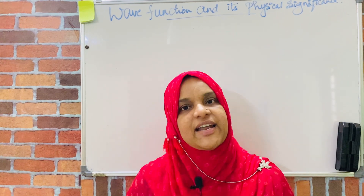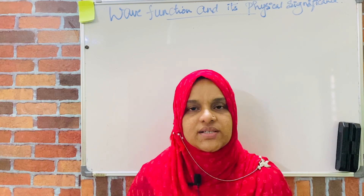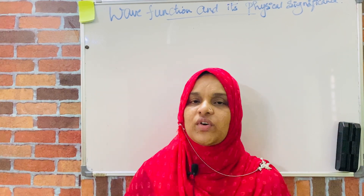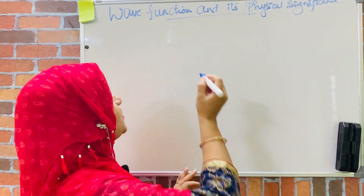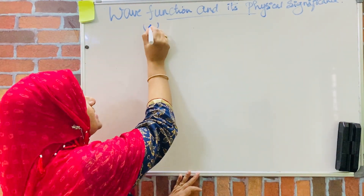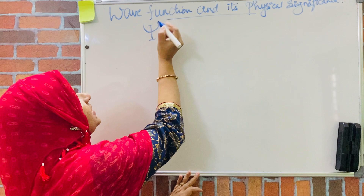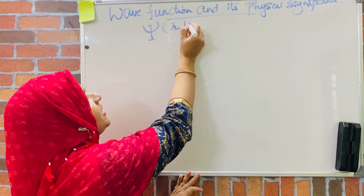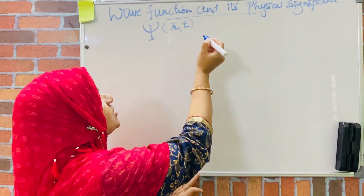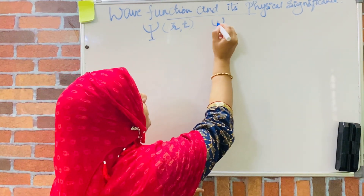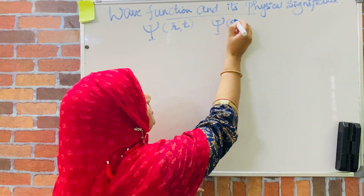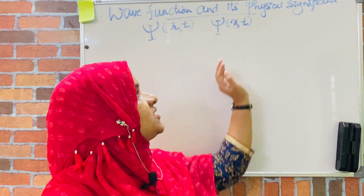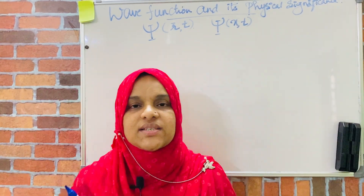The quantity whose variations make up the matter wave is known as wave function. Or, wave function can be defined as the quantity whose variations make up the matter waves. This wave function can be represented using the symbol psi, capital psi, which is a function of position vector r and time t. In one dimension, this can be represented as psi of x and t, where x is a single position variable and t is the time variable.